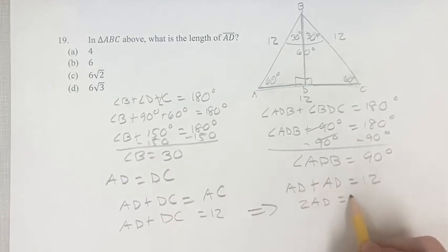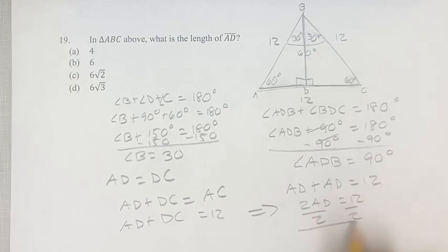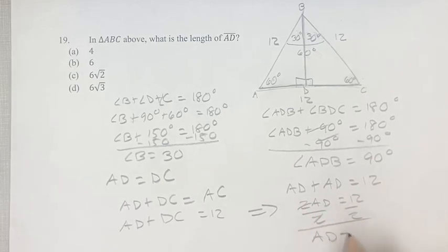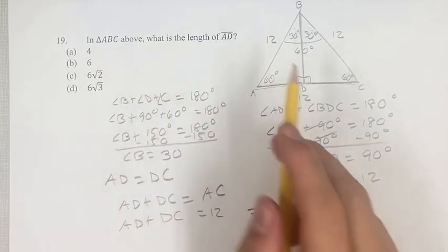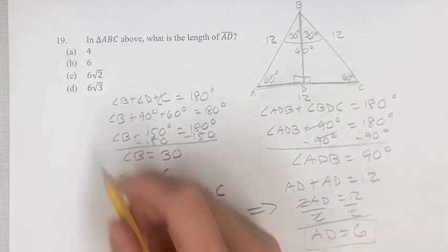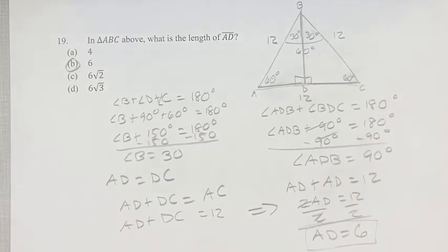2AD is equal to 12, dividing both sides by 2. AD is equal to 12 over 2, which is 6. In the triangle above, what's the length of AD? AD is equal to 6, which is going to be B.